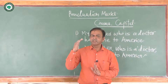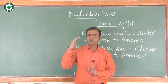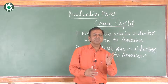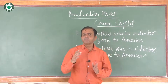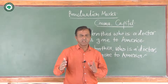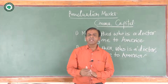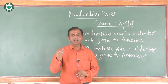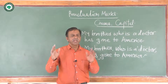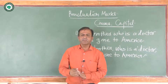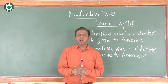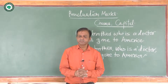This comma is also used to separate a city from its state. For example: 'Mr. Sagar is from Pravaranagar, Maharashtra.' Here 'Pravaranagar' is the name of the city, while 'Maharashtra' is the name of the state, and they are separated by using a comma.